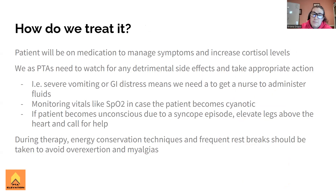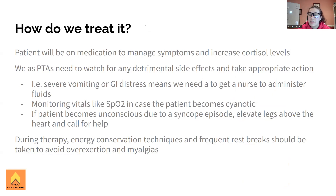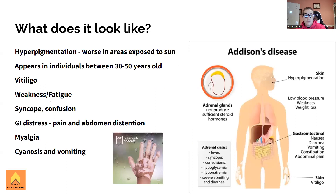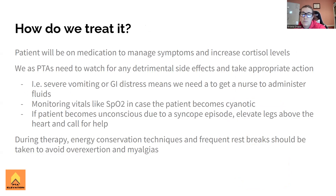So how do we treat it? As PTAs, we need to watch for any detrimental side effects and take appropriate action. For conditions like fever, syncope, and all that, we're going to assess and take care of the patient while also getting some help. For severe vomiting, we need to get a nurse to help administer fluid so they don't get super dehydrated. Monitoring vitals like SpO2 - the patient could become cyanotic and have difficulty breathing. If the patient becomes unconscious from a syncope episode, we're calling for help while elevating the patient's legs above their heart. Generally, if they're not in trouble, they'll be on medication to manage symptoms and increase cortisol levels to the appropriate level.